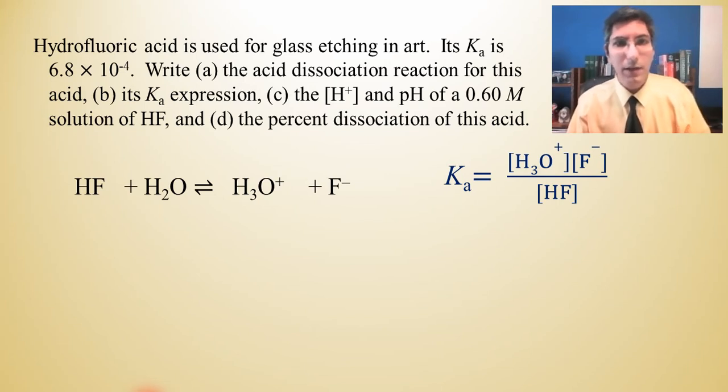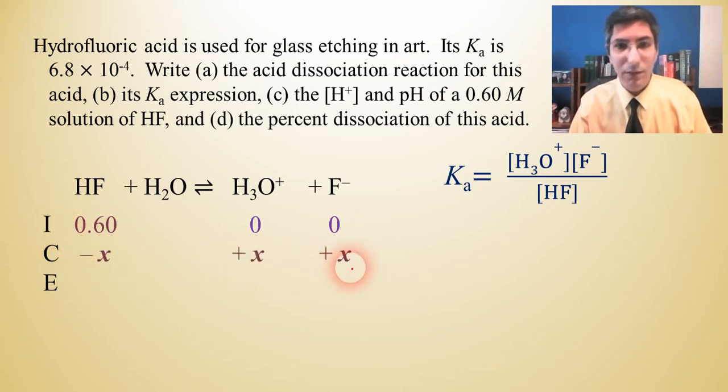Now to find the H+ and pH, we're going to need to set up an ice box here. So I'm going to put our ice box that stands for initial change and equilibrium concentrations. And we're going to put in our concentration of HF. It says here that it's a 0.60 molar, so I'm going to put a 0.60 here and our hydronium and fluoride will be zero starting out. And we don't know anything else, so we're going to put a -X and +X for the change row. And for equilibrium, that's 0.6-X, X and X whenever we add and subtract those values.